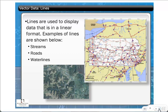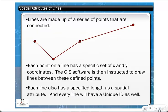Lines are used to display linear features such as streams, roads, water lines, and transmission lines. Lines are made up of a series of connected points, each with X and Y coordinates — the software connects the dots. In addition to the X and Y spatial attributes, every line has a specified length, and every line has a unique ID.